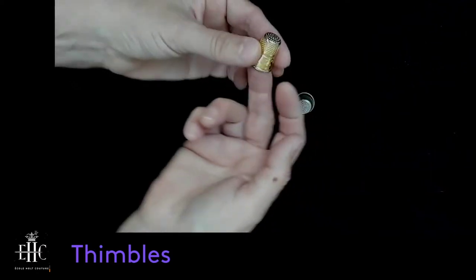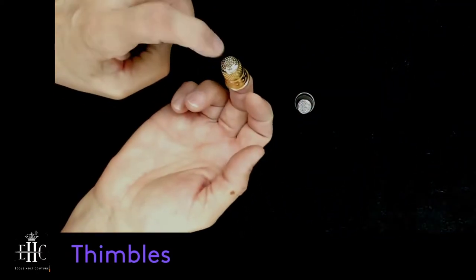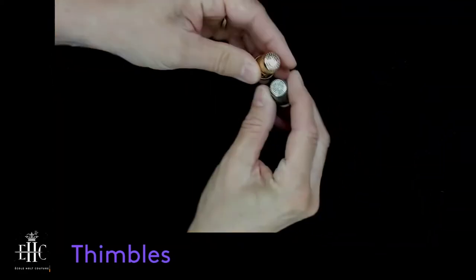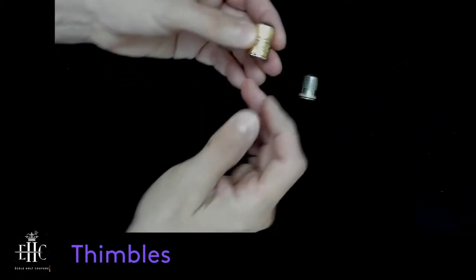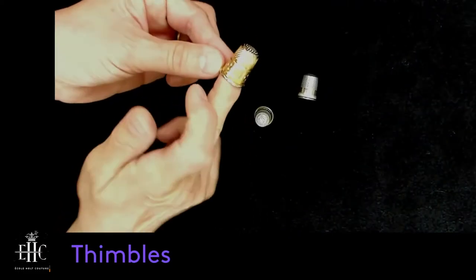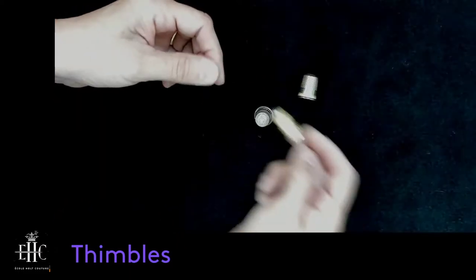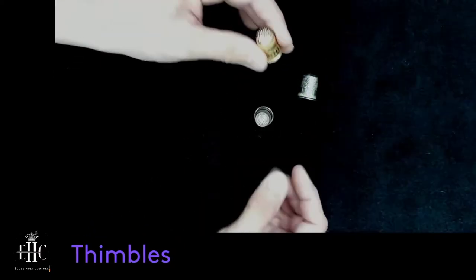They are round. They have a closed top because there are thimbles that have open tops. They need a closed top. They need to fit snugly on your middle finger, which is the finger that we use to push the needle through, whether you're left-handed or right-handed.